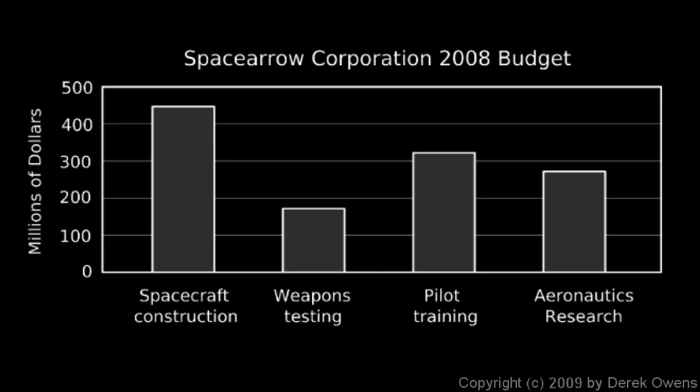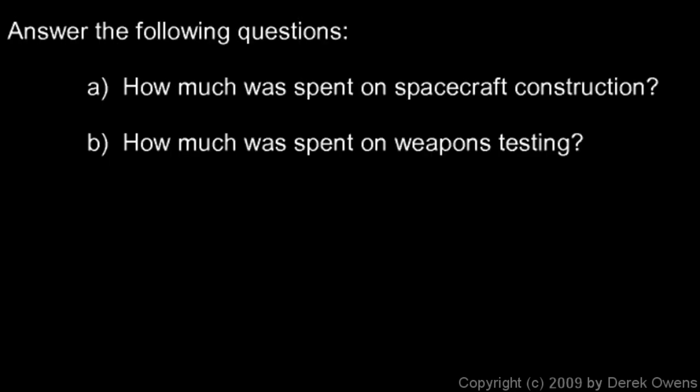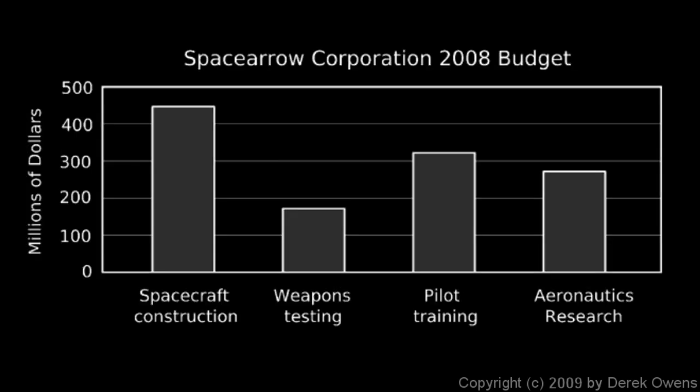We're given a couple of questions about this. We're asked how much was spent on spacecraft construction, and how much was spent on weapons testing. So let's take a look at the graph and find these numbers. Spacecraft construction is this category, and it looks like it's right between the 400 and 500 mark. Remember, that's in millions of dollars, so that's about 450 million dollars.